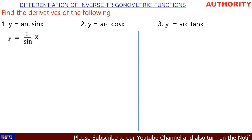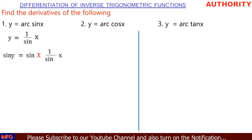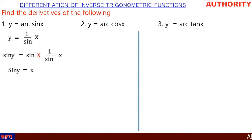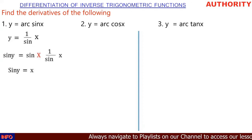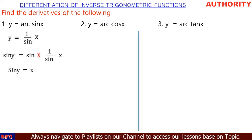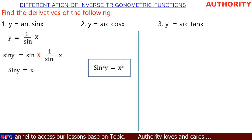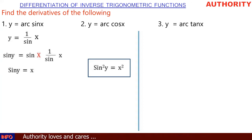If we multiply both sides by sin, we get sin(y) equals sin multiplied by one over sin(x) — the sin cancels — leaving sin(y) equals x. And if we say sin²(y), taking the square of both sides gives us sin²(y) equals x².